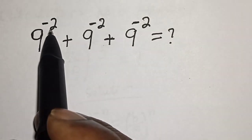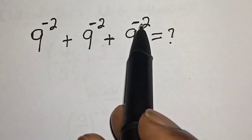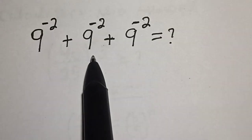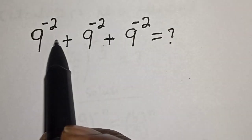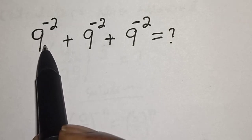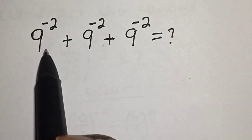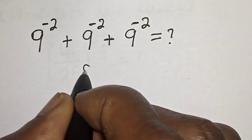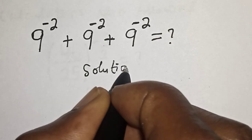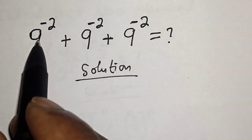9 raised to power minus 2, plus 9 raised to power minus 2, plus 9 raised to power minus 2 is equal to what? Hi everyone, welcome to my class. In this class we quickly want to simplify this nice question. But before we proceed, please don't forget to like, share, comment and subscribe.